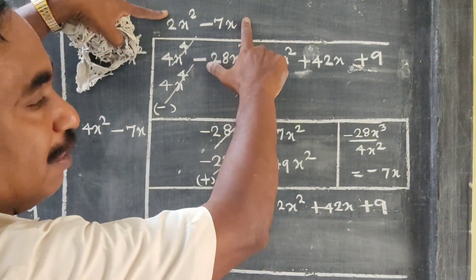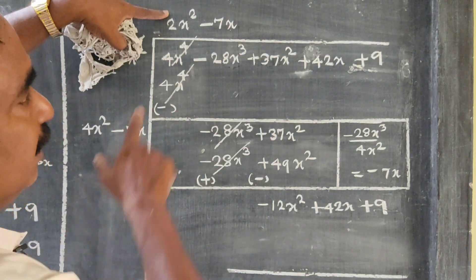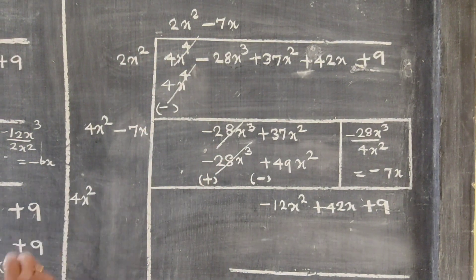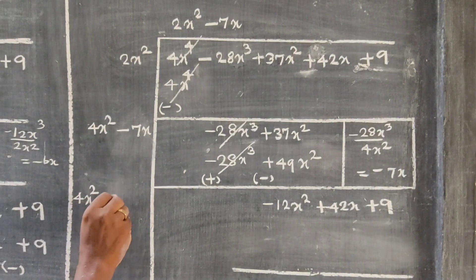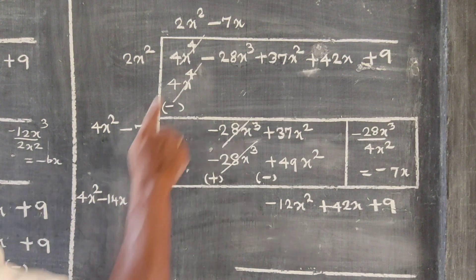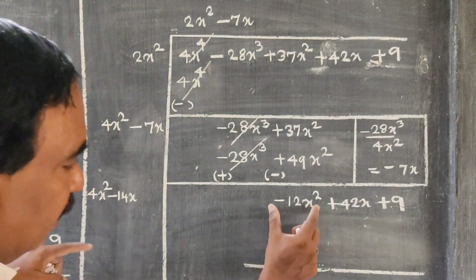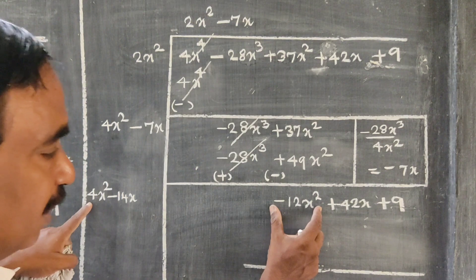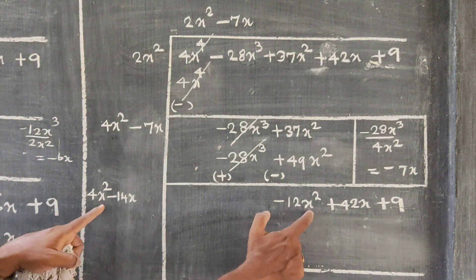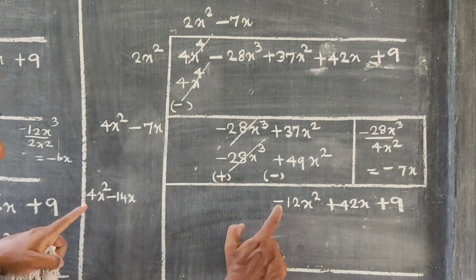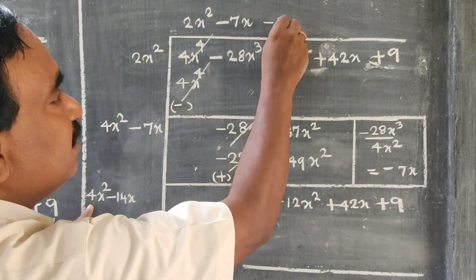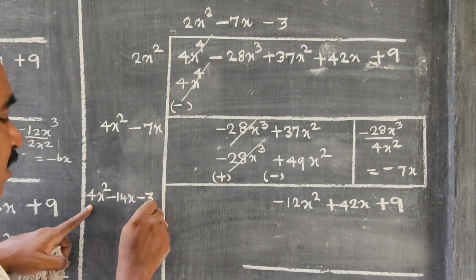Look at the x² term. What is 2 multiplied by 4x² — that gives 8x². Now, minus 12x² divided by 4x² is minus 3. So the next quotient term is minus 3. Adjusting: minus 12 by 4 is minus 3.